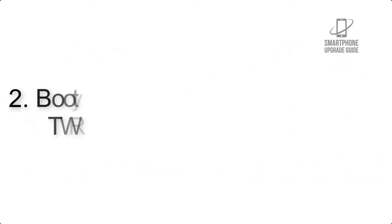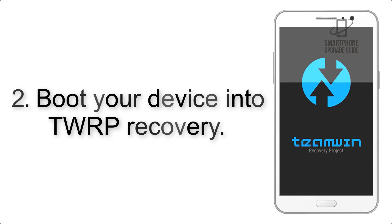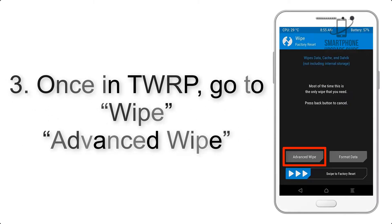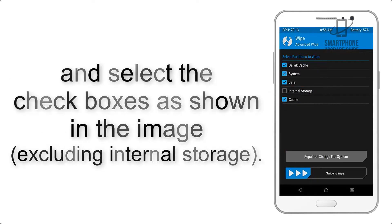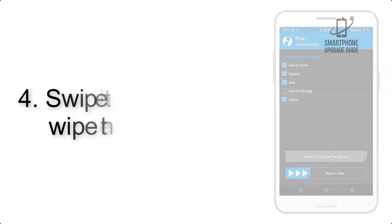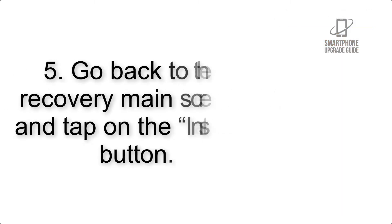Step 2: Boot your device into TWRP recovery. Once in TWRP, click on Wipe, then Advanced Wipe, and select the checkboxes as shown in the image, excluding internal storage. Step 4: Swipe the button to wipe the device.